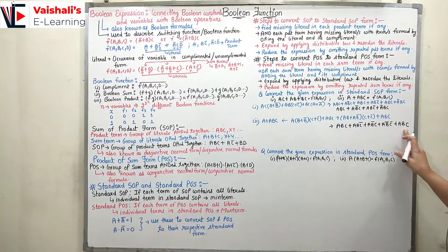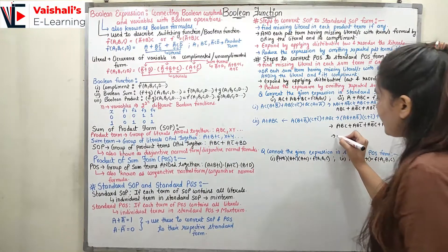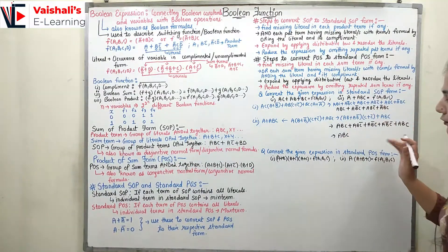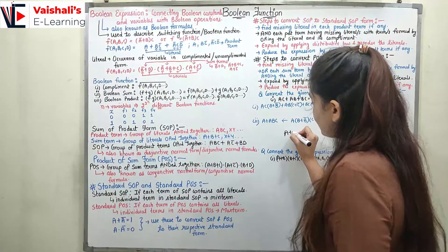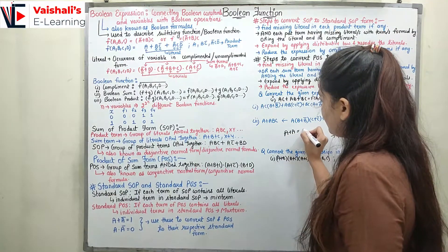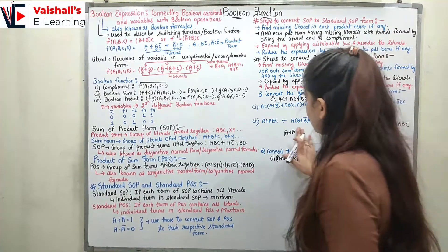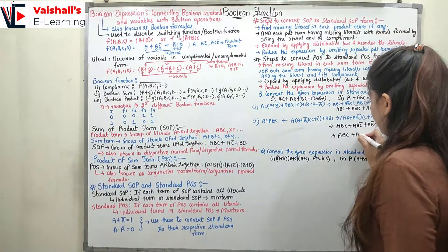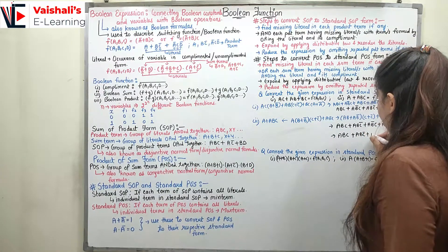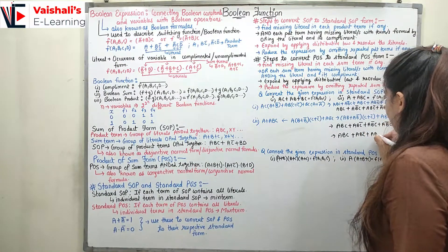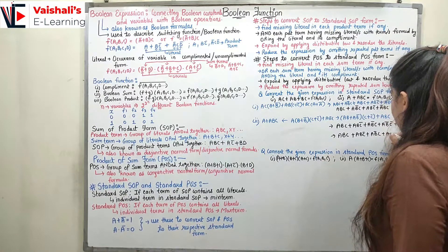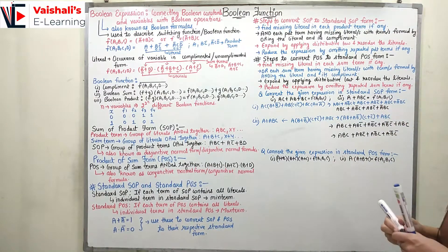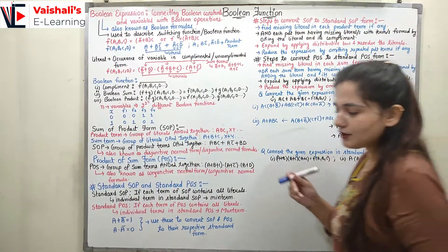After expanding, abc appears twice so we keep it only once. The standard SOP result is: abc + abc_bar + ab_bar·c + ab_bar·c_bar. I hope you understood how to convert SOP to its standard form.